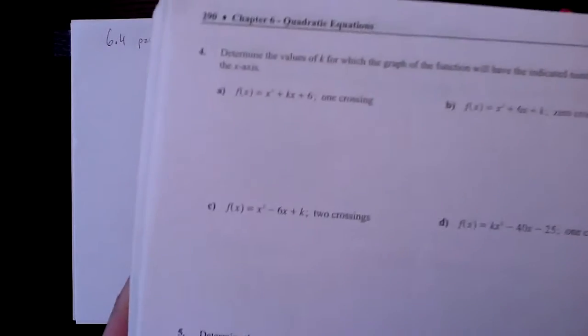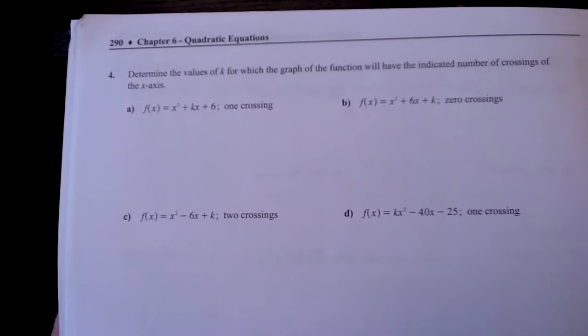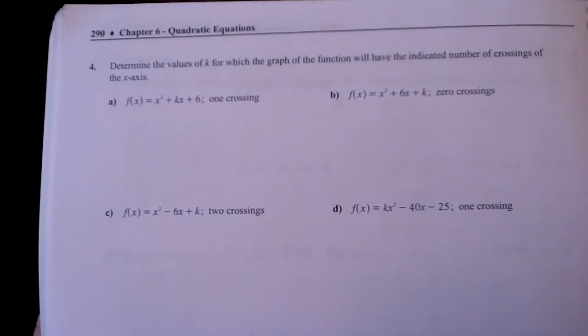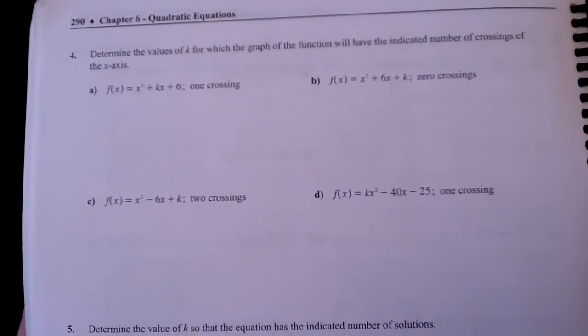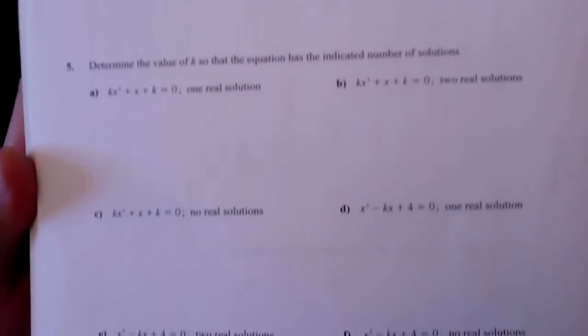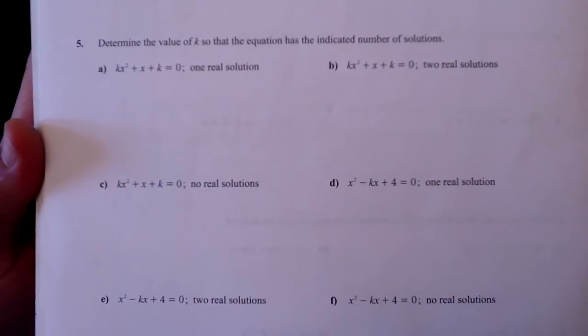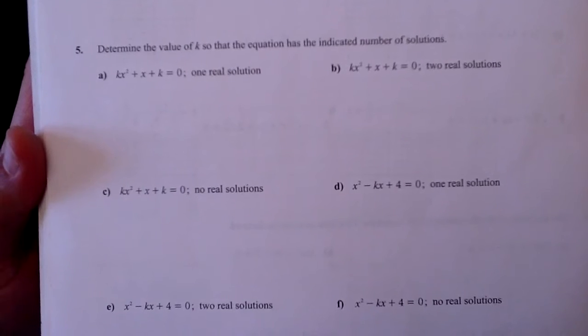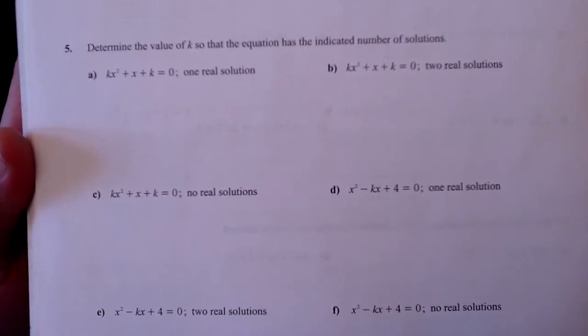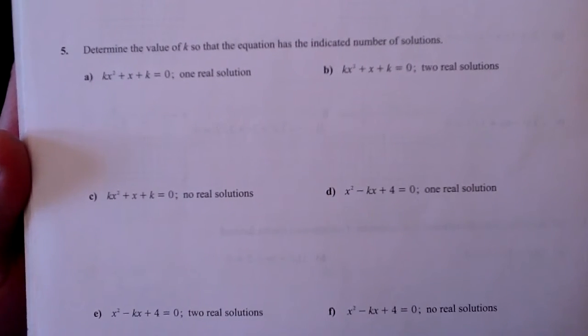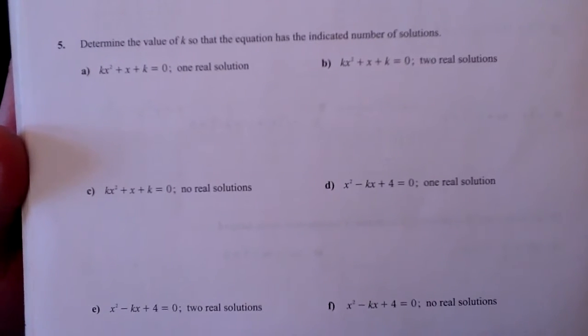Hey, exercise five. They really like to test you here. In exercise five, it looks like exercise four. This is page 290. In exercise four, you're trying to figure out a k given the number of crossings, and then here on number five, they call them solutions rather than crossings, but really that's the same thing. It's the number of times that the parabola will cross the x-axis.